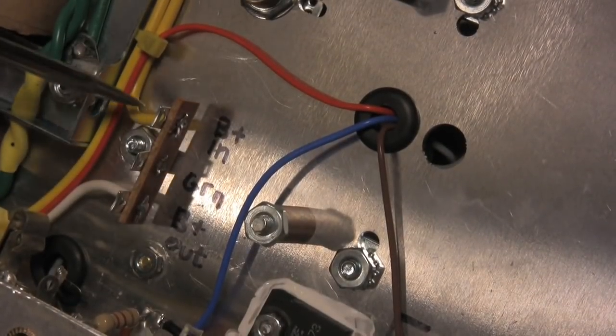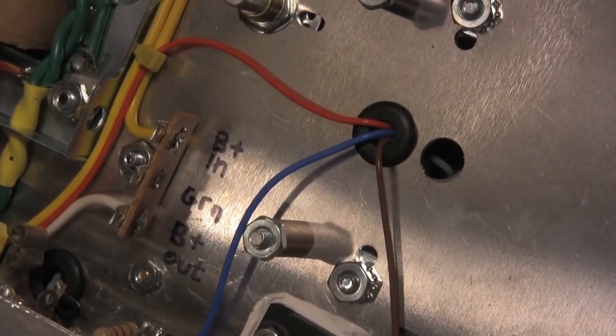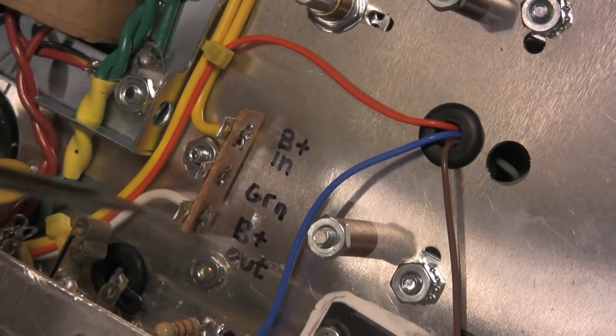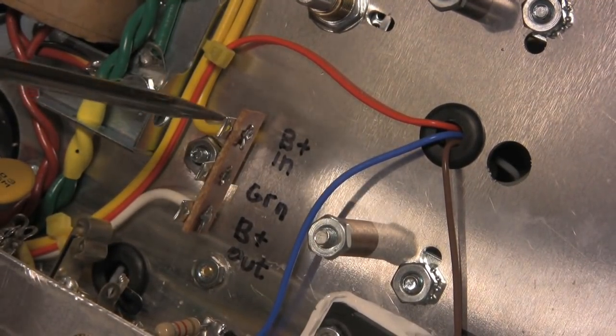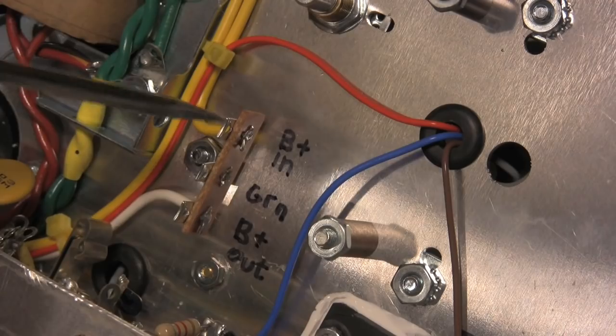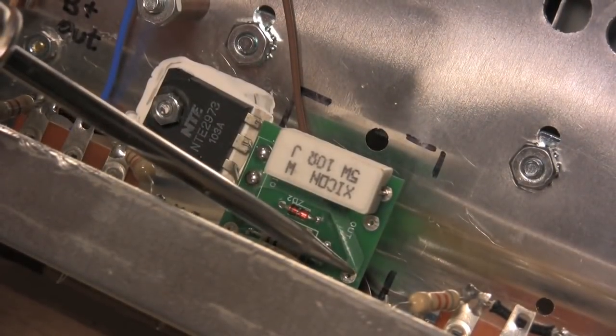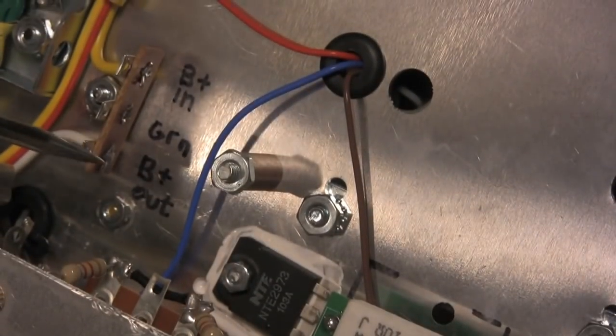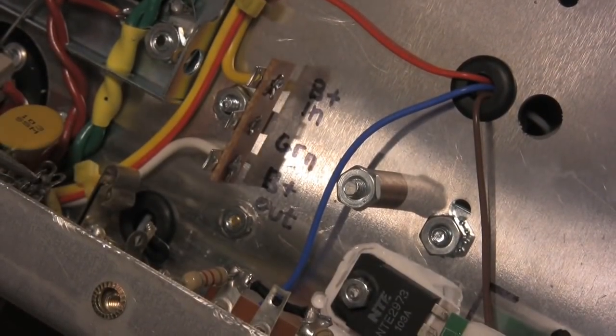I'm using a strip terminal with three connectors to interface the VVR to my amp. One for B plus in, B plus out, and a ground connector. The B plus in comes from the standby switch and will go into my VVR via the B plus in. The B plus out from my VVR will go back to the port on the B plus out and then feeding my amp.